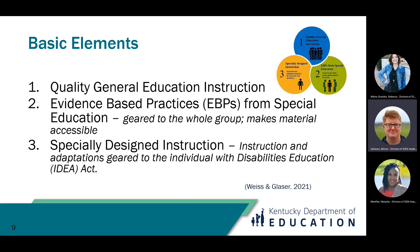Once you have those two layers, for really quality co-teaching practices, you add on the final third tier of specially designed instruction. This is intentionally provided differentiated instruction for students based on their individual needs and goals as written in their IEPs. In that same early literacy classroom, you would then add in specially designed instruction for specific students directly related to their IEP reading goals — for example, oral reading fluency. Those three components layered together are really the most effective basic way to approach co-teaching.